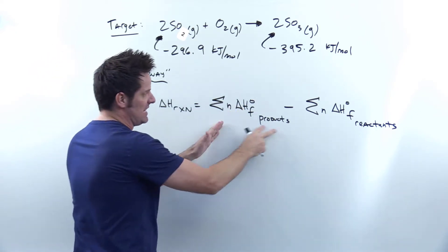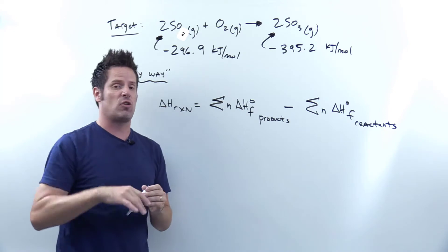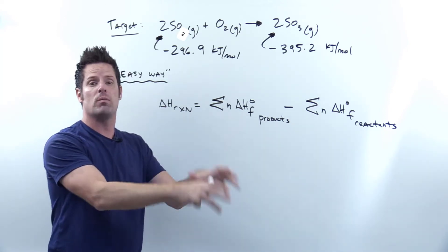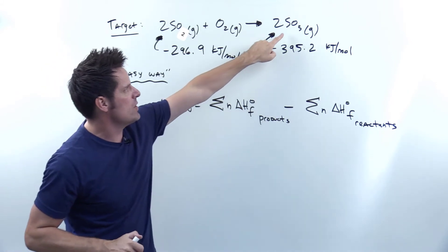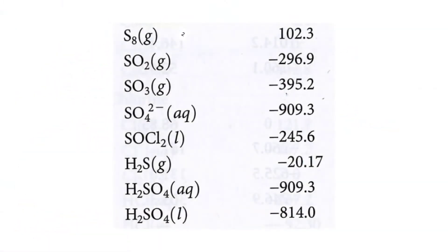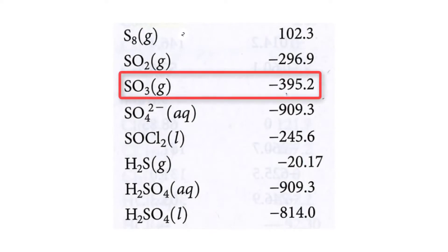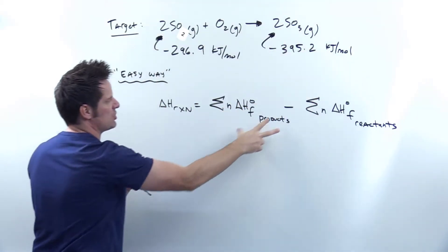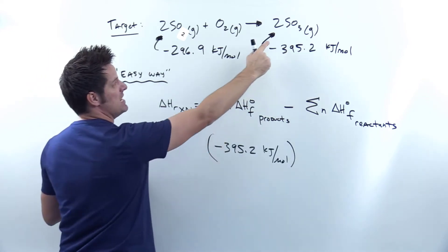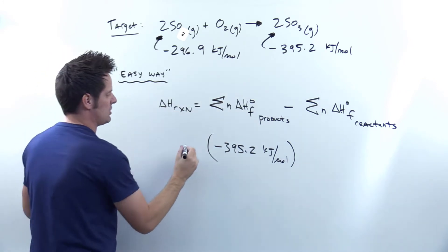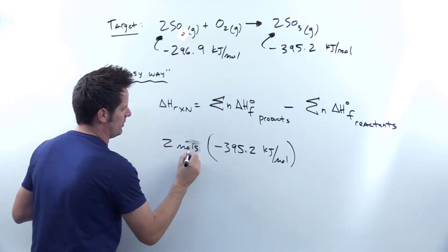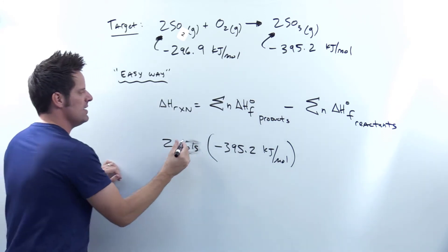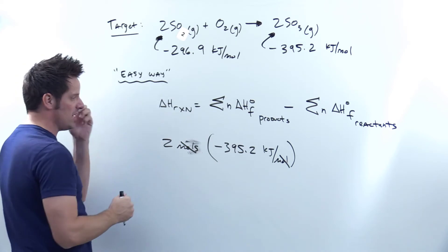To get these values we go to an appendix of thermodynamic tables and look up specifically the heats of formation for each substance in the specific physical state — solid, liquid, or gas — as shown. We look up SO3 gas, and the heat of formation of SO3 gas is negative 395.2 kilojoules per mole. That goes on the product side, multiplied by the coefficient in front of SO3, which is 2 moles. The moles cancel, leaving kilojoules as the final unit.